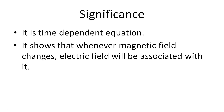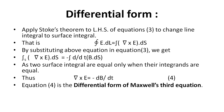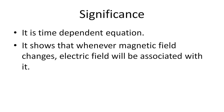The significance of Maxwell's third equation: it is a time-dependent equation, unlike the first two Maxwell equations which are time-independent. It shows that whenever the magnetic field changes, an electric field will be associated with it. As seen in equation 4, whenever the magnetic field changes (dB/dt ≠ 0), a curl of the electric field (∇×E) will be associated with it.